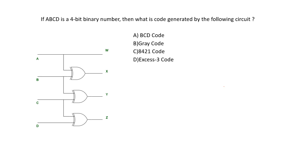This is a previous year ISRO question. If ABCD is a 4-bit binary number, then what is the code generated by the following circuit? Looking at the circuit, we can identify it as a binary to Gray code converter.